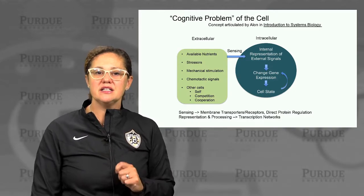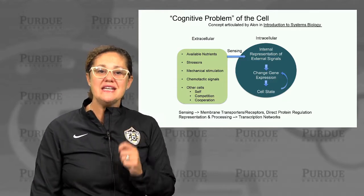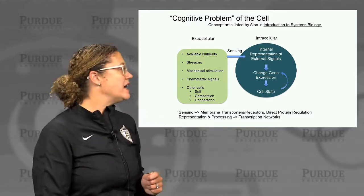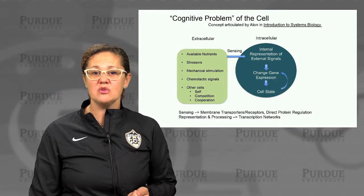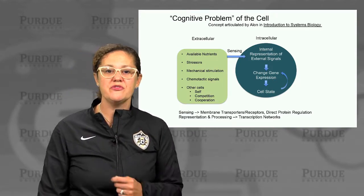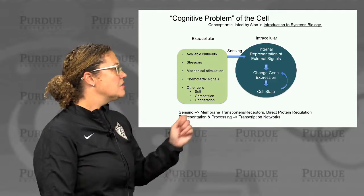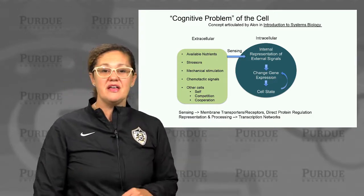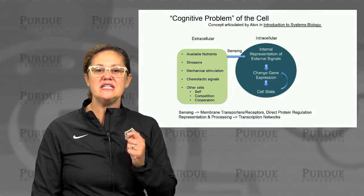We also talked about the cognitive problem of the cell. Cells are natural sensors — it's part of their job that they must do to survive. They must sense their extracellular environment: are there available nutrients around, and if so which ones, so a cell can decide which enzymes it needs to make to metabolize that molecular food? Are there stressors it needs to swim away from? In the case of bacteria, mechanical and chemotactic signals and others. Are there other cells around, and if so what kind? Cells have to sense that information and transduce it into a measurable signal that the cell itself can respond to.